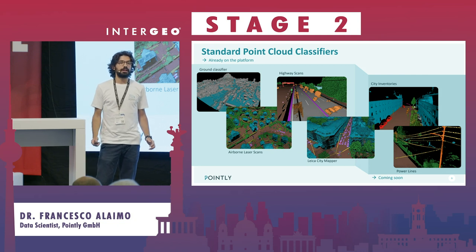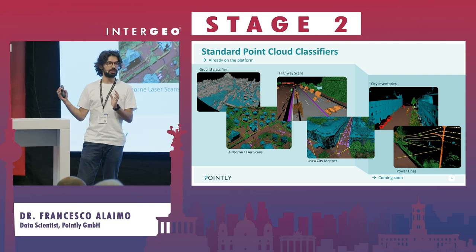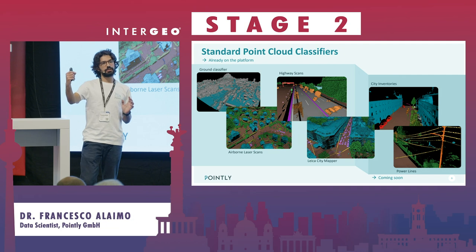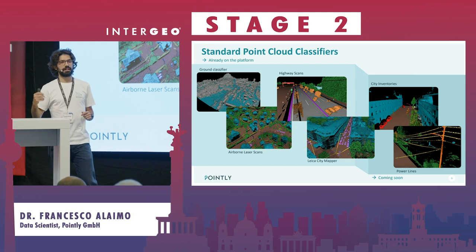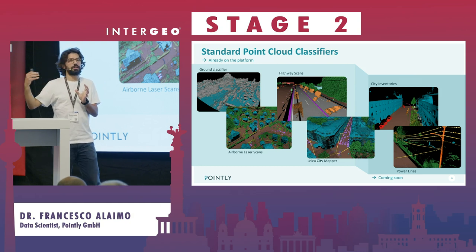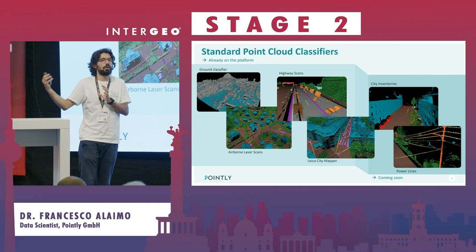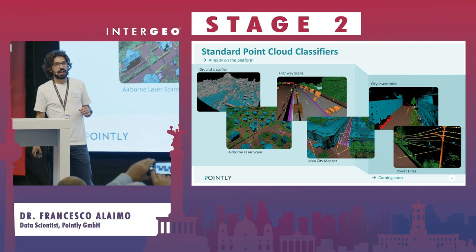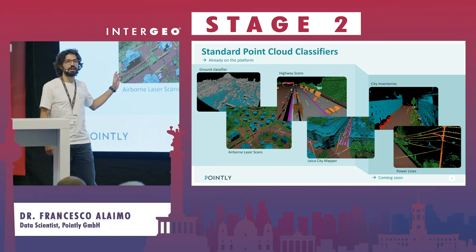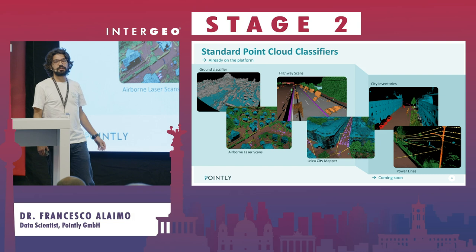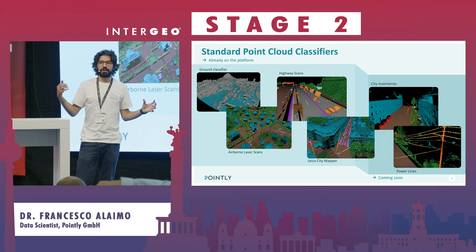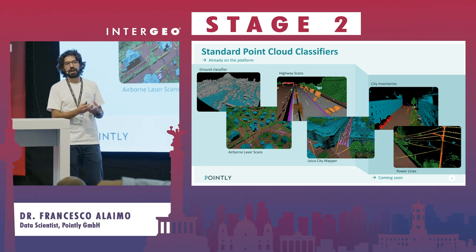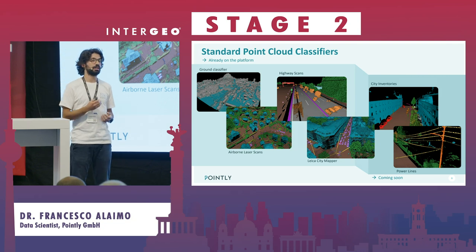For this we have what we call standard classifiers — a set of models available on the platform so that a user can upload a point cloud, choose which model is appropriate for their needs, and receive an automatic classification that can also be manually corrected in the viewer for any misclassifications. Until now we have a LiDAR ground classifier and a more general standard classifier for airborne laser scans. This means the point cloud is classified according to predefined classes including ground, building, vehicles, vegetation, and street furniture.